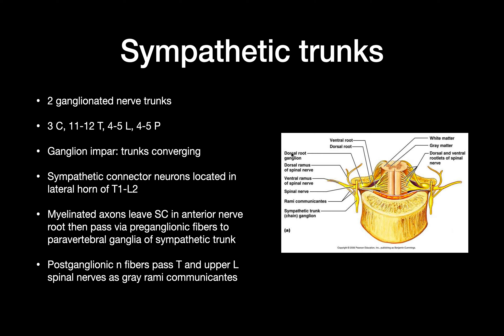There are two ganglionated nerve trunks, one on each side, following the vertebrae. There are three ganglia for the cervical spine, 11 to 12 for the thoracic region, four to five for the lumbar, and four to five for the pelvic region. The ganglion impar is where the trunks converge. The sympathetic connector neurons are located in the lateral horn of T1 to L2. Myelinated axons leave the spinal cord through the anterior nerve root and pass through the preganglionic fibers, the paravertebral ganglia of the sympathetic trunk, and the postganglionic fibers pass the thoracic and upper lumbar spinal nerves as the gray rami communicantes.